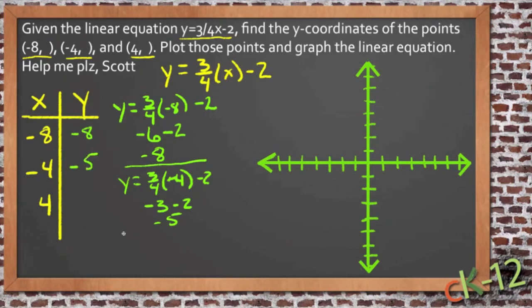And finally, if we put 4 in, we get y equals 3 fourths of 4 minus 2. 3 fourths of 4 is 3. 3 minus 2 equals 1. So, if x is 4, y is 1. So now let's plot these three points.